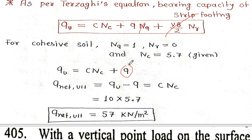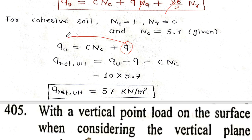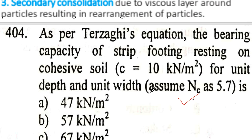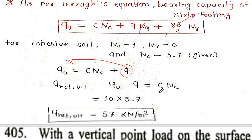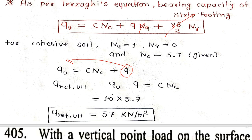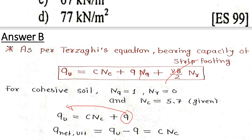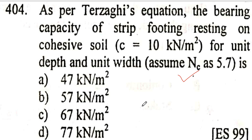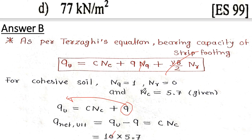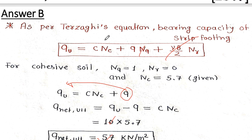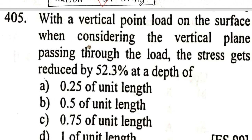So the ultimate bearing capacity simplifies to c·Nc plus q. For net bearing capacity with the surcharge term reducing, the result is directly 5.7 times c. So the net ultimate bearing capacity is 5.7C.